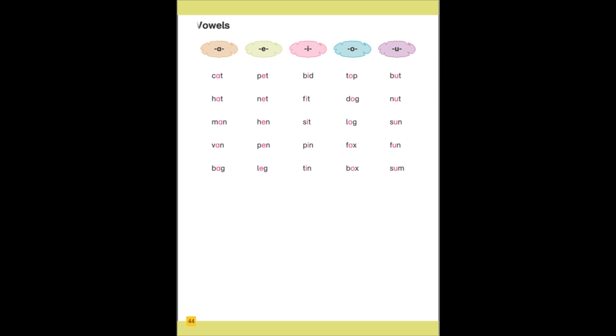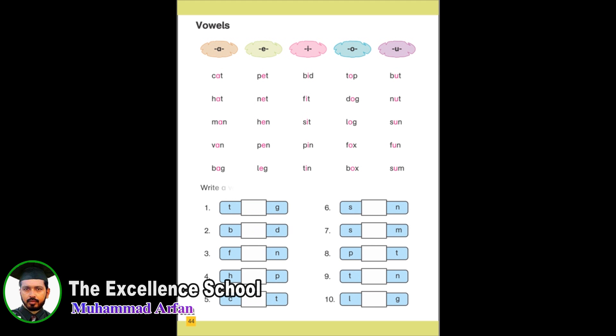Small letter J, jeep. Write a vowel in each box to make a word.